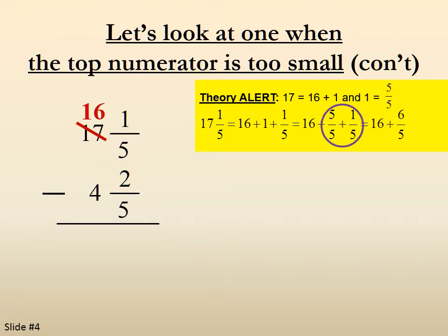And then the 5 over 5 plus the 1 over 5 becomes 6 over 5. So it becomes 16 and 6 fifths. That's the theory.